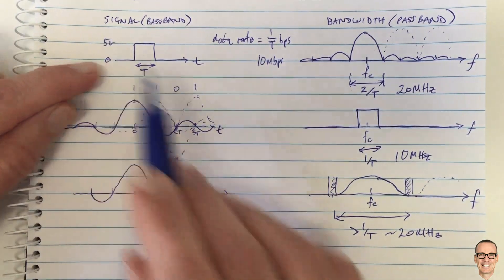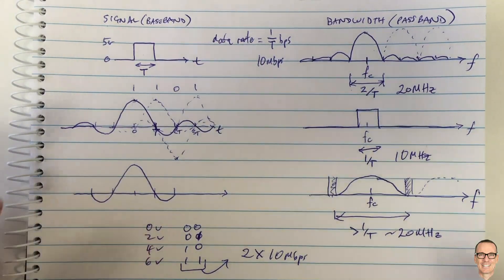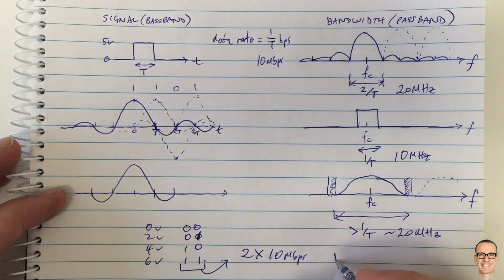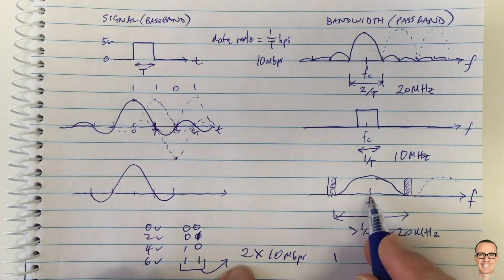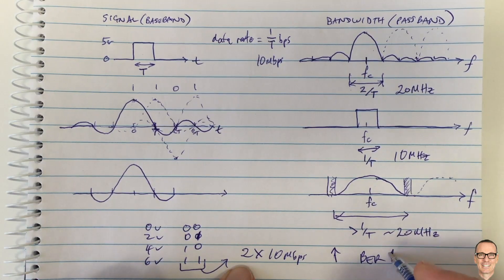Of course, as always with these things there's a penalty that you pay, and the penalty is that for the same overall power the levels are closer together. So here they were five volts apart whereas here they are only two volts apart. What that means is they're more susceptible to noise at the receiver, and so the data rate goes up for the same bandwidth, but also the bit error rate goes up as well.